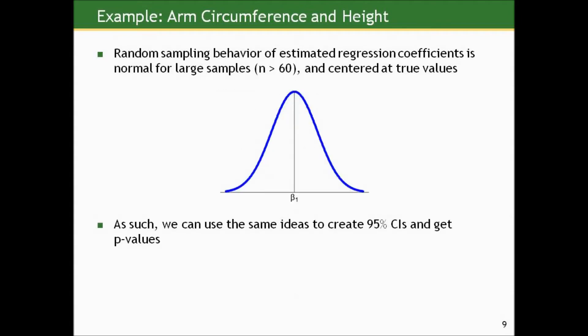This is nothing new. These are really just means and mean differences — the intercept is some sort of mean, and slopes are nothing more than mean differences. The random sampling behavior of regression coefficients is just like we saw for means and mean differences. For large samples with n greater than 60, the sampling distribution will be normal, centered at the true value. The sampling distribution of beta-one-hat — estimated slopes from all random samples of 150 — would be centered at the true beta-one and vary in a normal fashion around it. As such, we can use the same ideas to create 95% confidence intervals and p-values that we did for means and mean differences before.